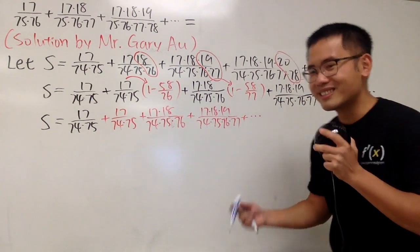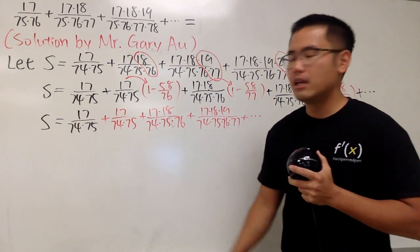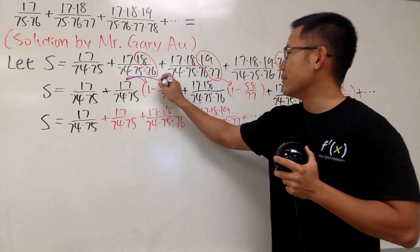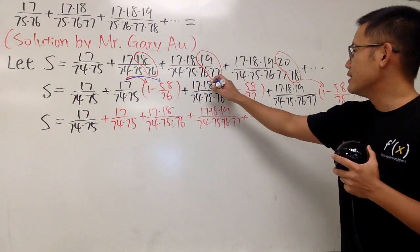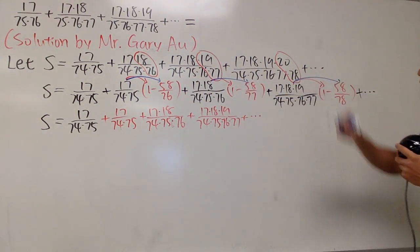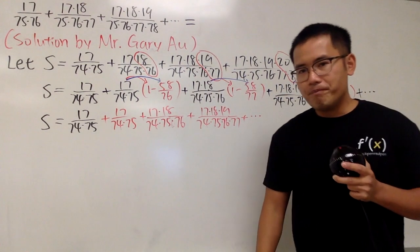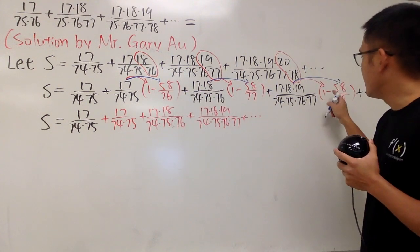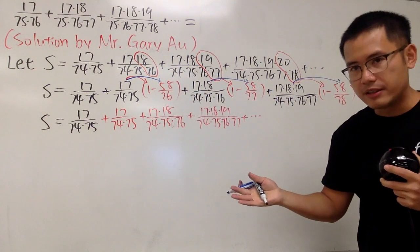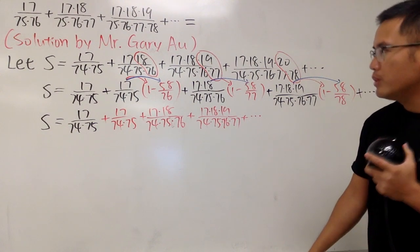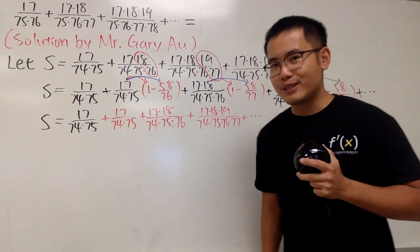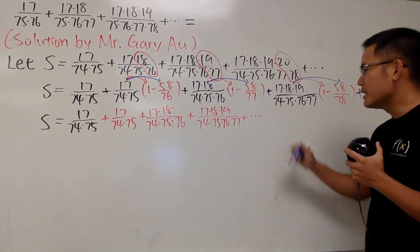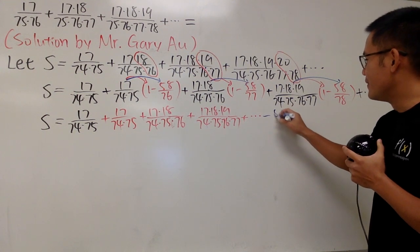Now, we'll take this guy times 1. And as you can see, when we do this times that, of course it's just that. So let me just put a plus, 17 over 74 times 75. Does this look familiar? Well, better yet, look at the following. If we take this, multiply by 1, well, we'll just get this guy. Very good. And, of course, this right here, we will continue. So put a plus dot dot dot. Yes. All the red things right here is just the original S.